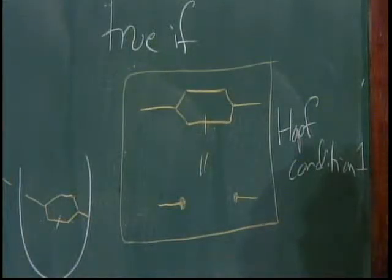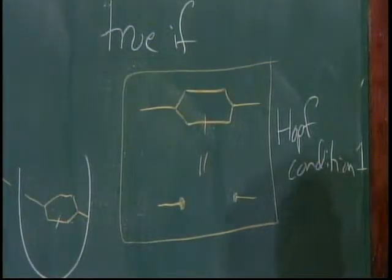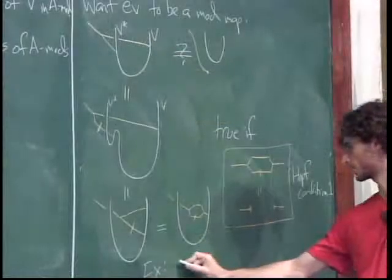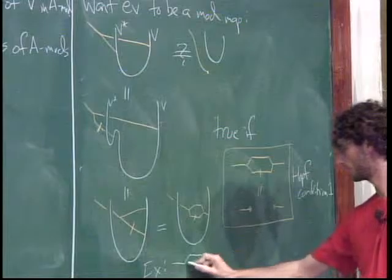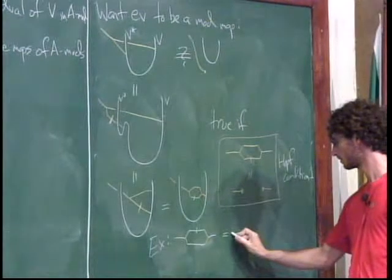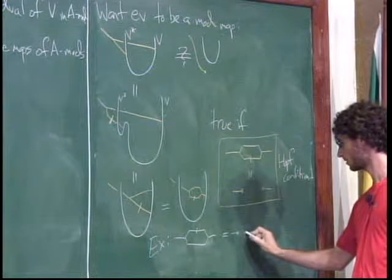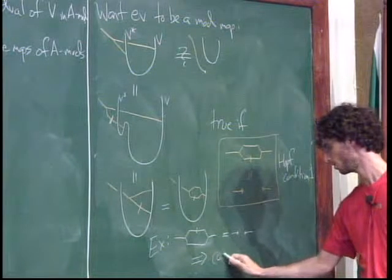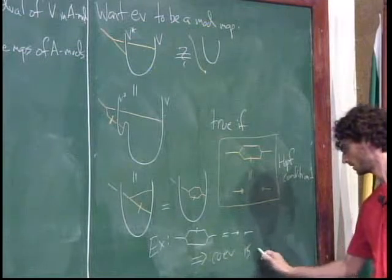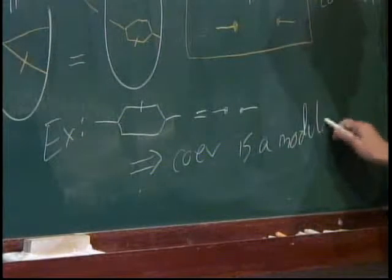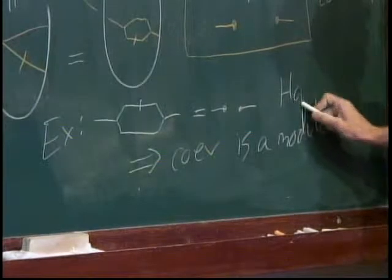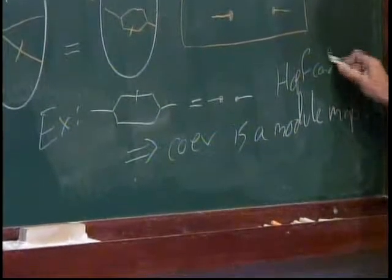Similarly, putting the antipode on the other leg and requiring the analogous condition implies that the co-evaluation is a module map. That's Hopf condition two.